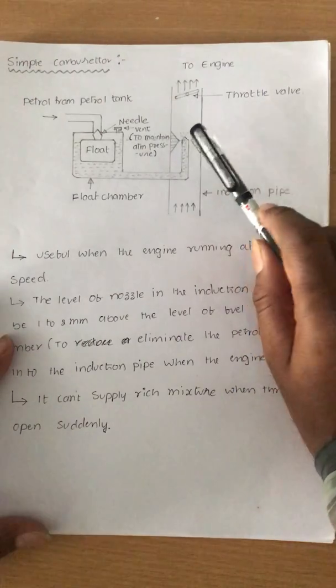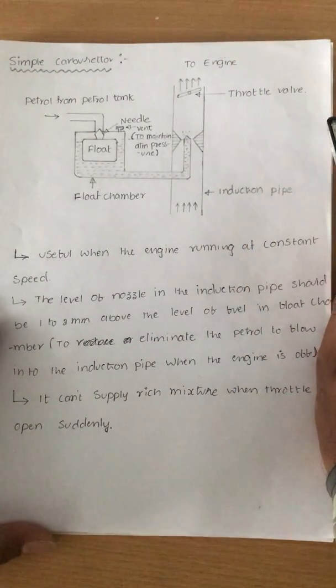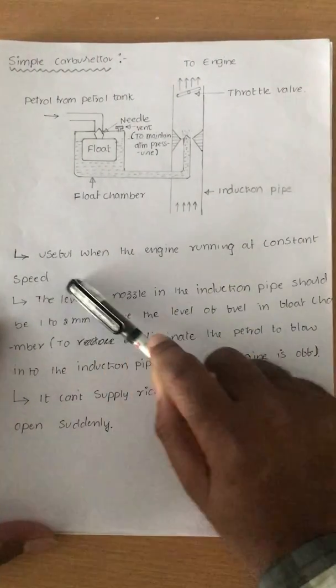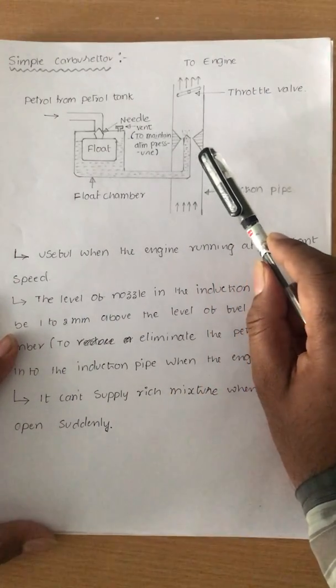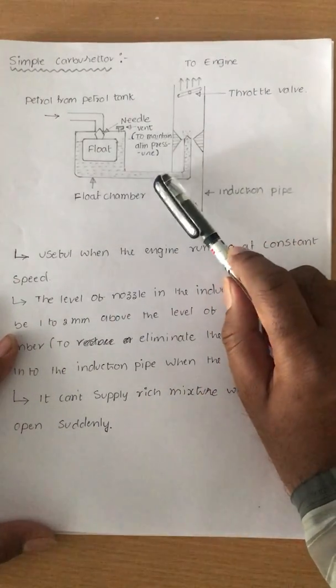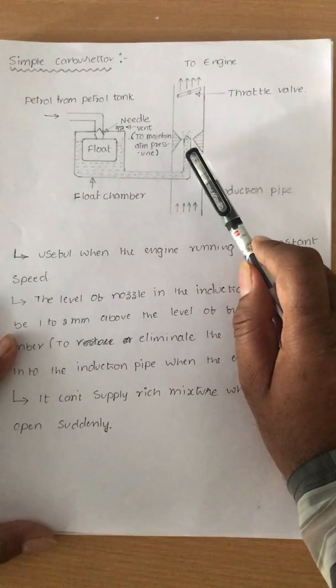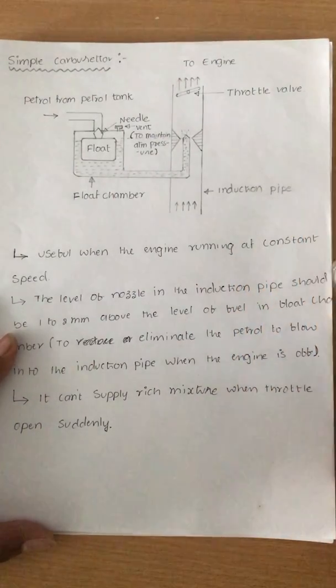This is the working of a simple carburetor. We have to notice several points. The first point is it's useful when the engine runs at constant speed. It cannot serve a variety of speeds. If I fix this simple carburetor to a vehicle for transportation, it cannot serve properly because it's for constant speed only.